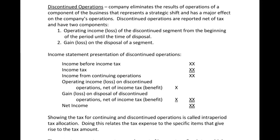A couple of key things here: discontinued operations are reported net of tax. Essentially, you just multiply by one minus the tax rate, but we'll get into that in a second. There are two components to discontinued operations.